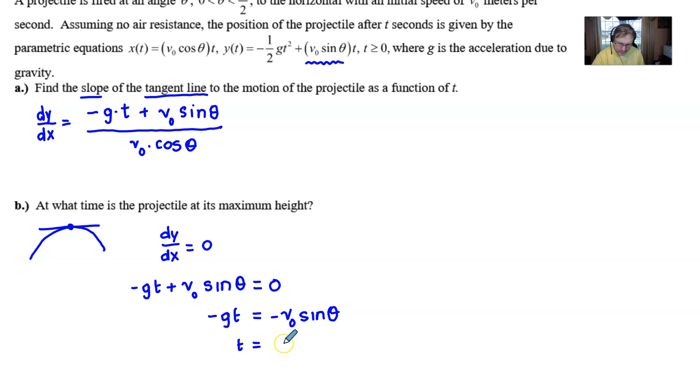Now the negatives are going to just cancel, and so essentially you just simply have the initial velocity times the sine of the angle at which you shot that projectile divided by your gravitational constant. And that's always going to be the time at which your projectile reaches its maximum height.